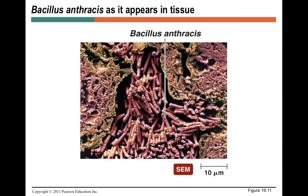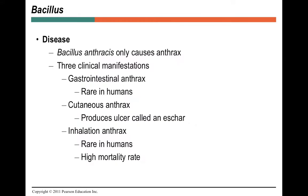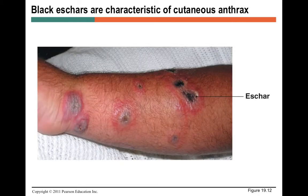Moving to gram-positive bacilli: here's a scanning electron micrograph of Bacillus anthracis. The only species within the Bacillus genus we care about is Bacillus anthracis. It can infect your GI tract, your skin, or be inhaled — with a very high mortality rate for inhaled anthrax. The black eschars are characteristic of cutaneous anthrax. GI anthrax usually occurs through consuming food with large enough cell counts of Bacillus anthracis.